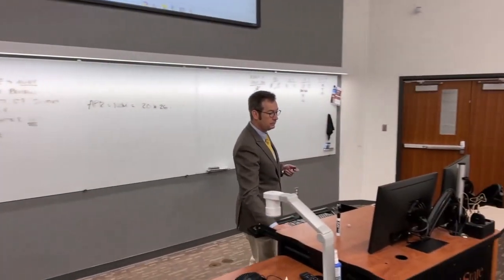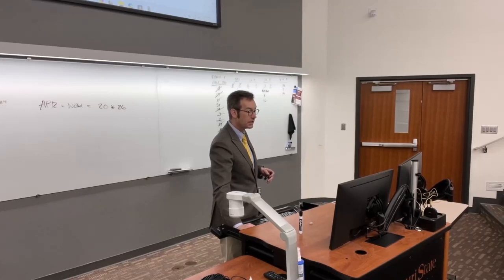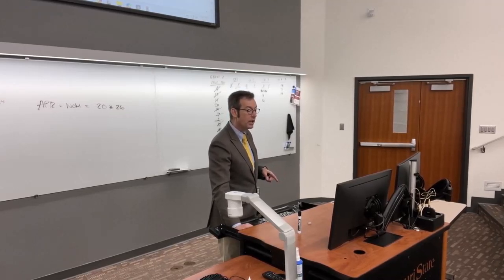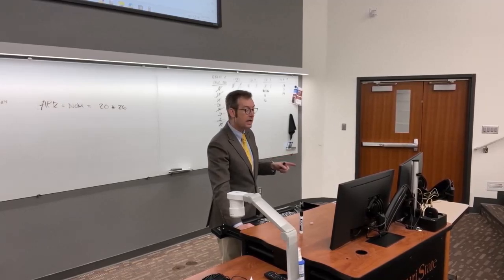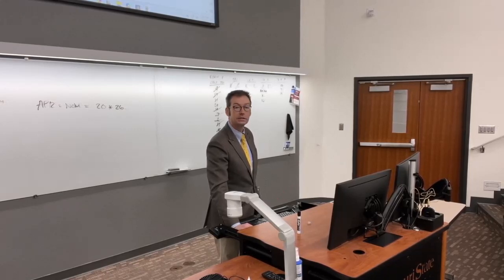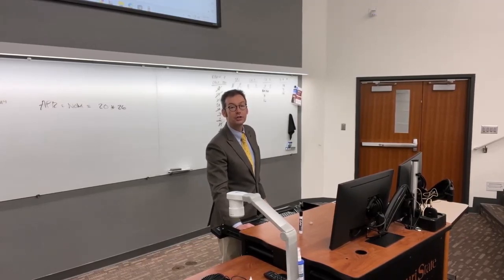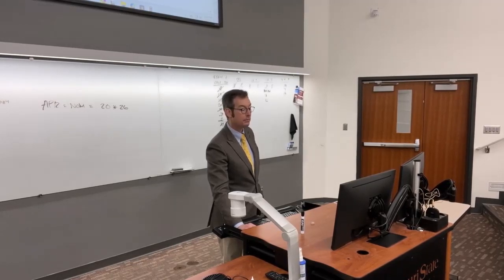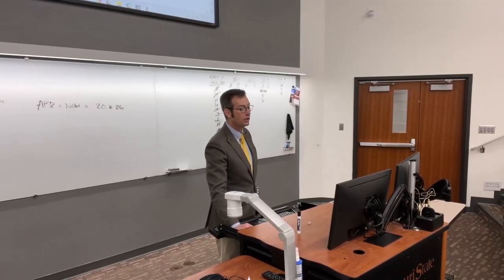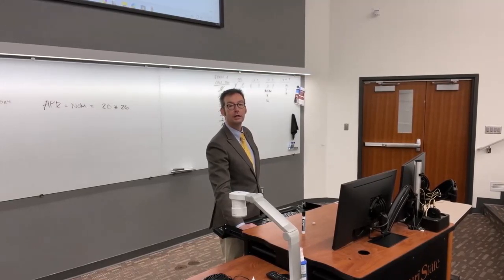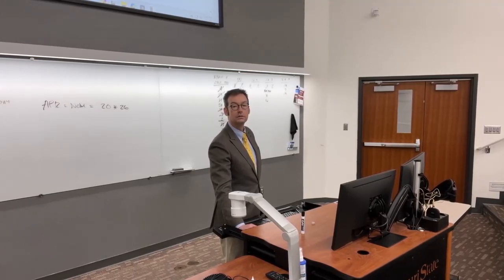Let me walk through it one more time. Clear. Enter nominal: 20 times 26 equals, then enter. Arrow up. Compoundings per year: 26, enter. Arrow up to EFF. Compute. That's the enormous, disgusting number.